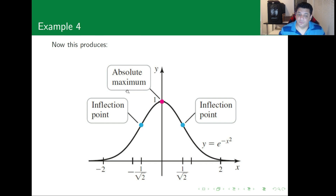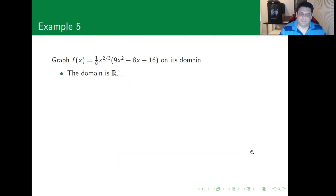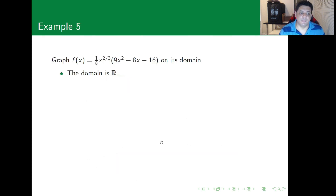The absolute maximum occurs at x = 0 with f(0) = 1. The inflection points are at x = ±1/√2. This function is closely related to the normal distribution, which is why it has the characteristic bell shape.